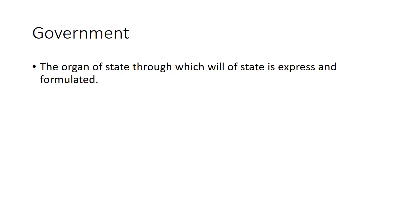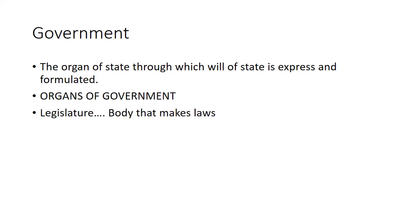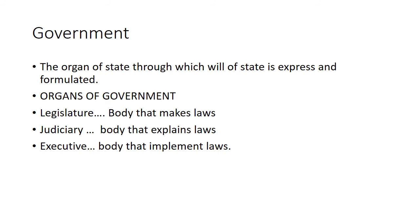The government is the organ of state through which the will of state is expressed and formulated. The government comprises three main organs. First is the legislature — the body that makes laws. Next is the judiciary — the organ of government that explains laws. And the executive is the body that implements laws. So legislature makes laws, judiciary explains those laws, and executive implements those laws.